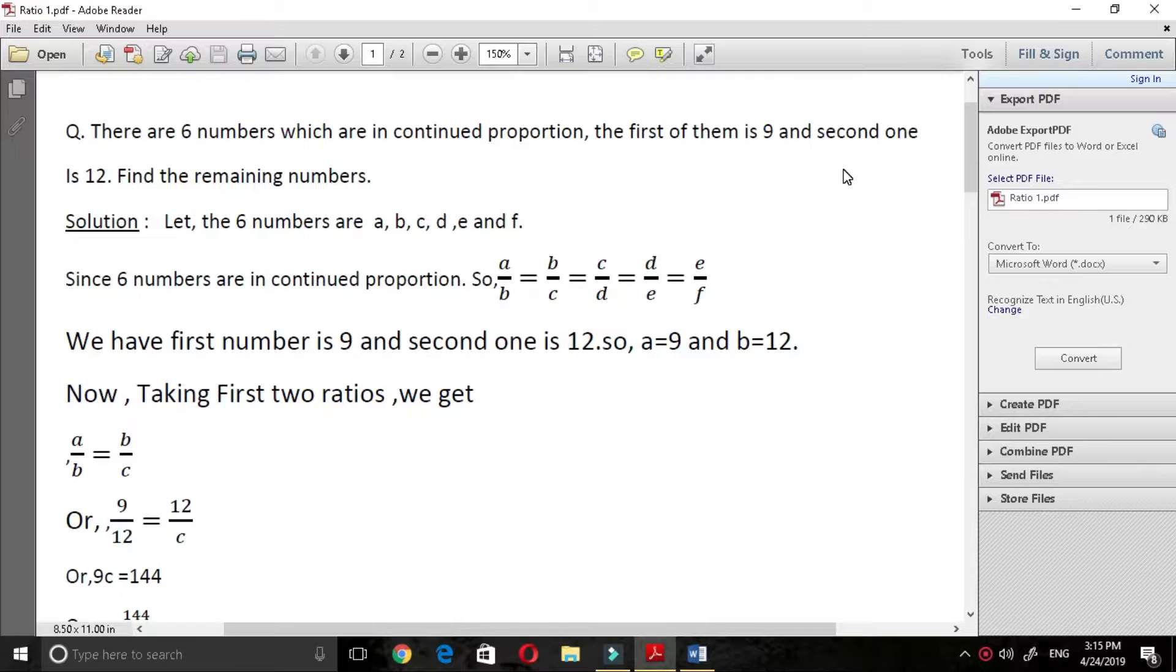It means 6 numbers are in continued proportion and first of them is 9 and second one is 12, then we have to find the remaining numbers. So, let the 6 numbers be a, b, c, d, e and f.